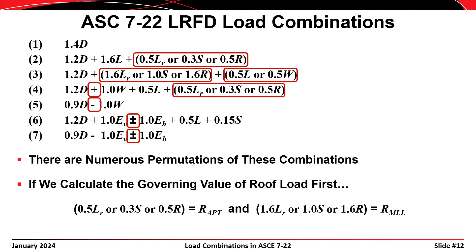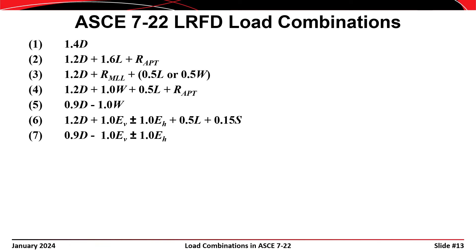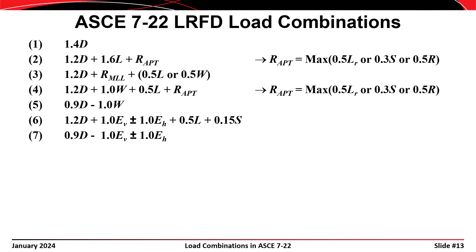One way to simplify this is to consider the roof loading as a single variable, defining 0.5 L sub R, or 0.3 S, or 0.5 R as the arbitrary point in time roof loading R sub APT, and defining 1.6 L sub R, or 1.0 times S, or 1.6 times R as the maximum lifetime level roof loading R sub MLL. When we make that modification, the load combinations use R in place of the roof loads in combinations 2, 3, and 4, with R sub APT for arbitrary point in time roof loading and R sub MLL for maximum lifetime level roof loading. This can be a bit confusing at first since R can denote rain load in some cases and roof loading in others, but after working through a few problems the utility of this approach becomes apparent.